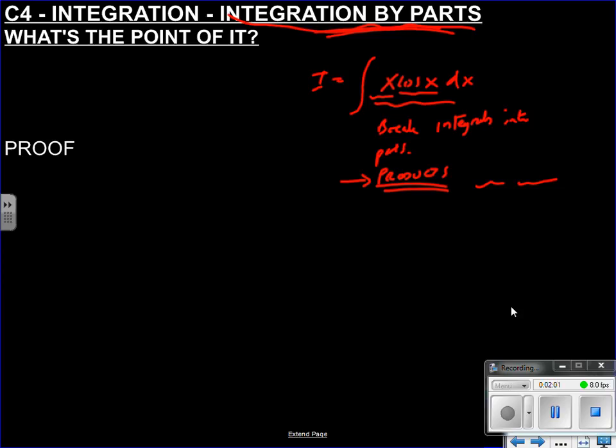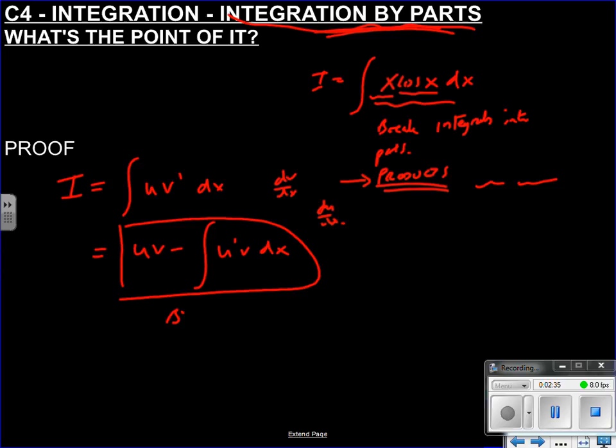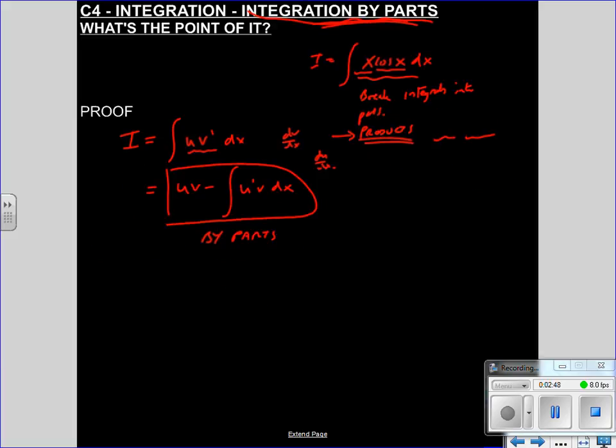But let's just quickly see where the proof comes from, because the integration by parts formula, which you do need to know, is that if you are integrating u v dash, that will come out as u v minus u dash v dx. And u dash and v dash means dv by dx, or du by dx. So this is your integration by parts formula, which you need to remember.